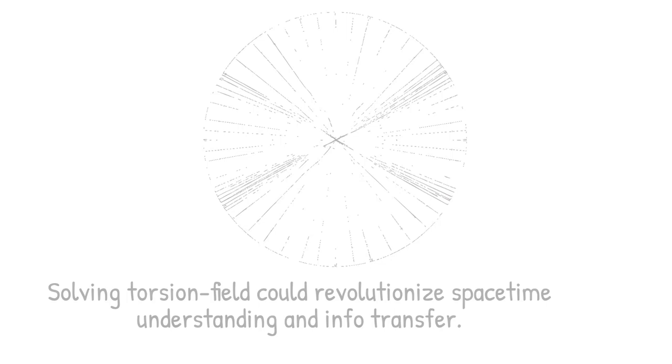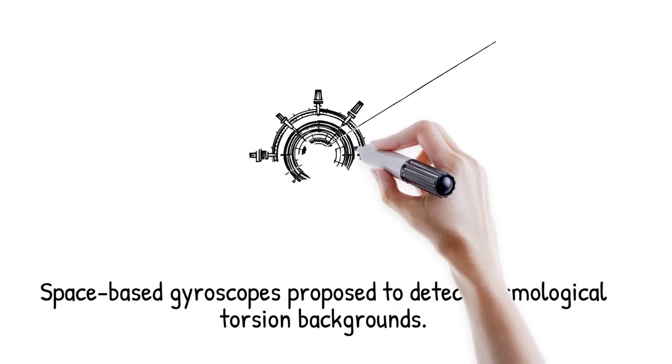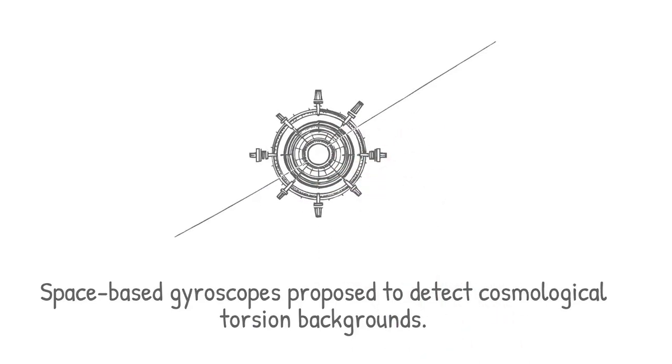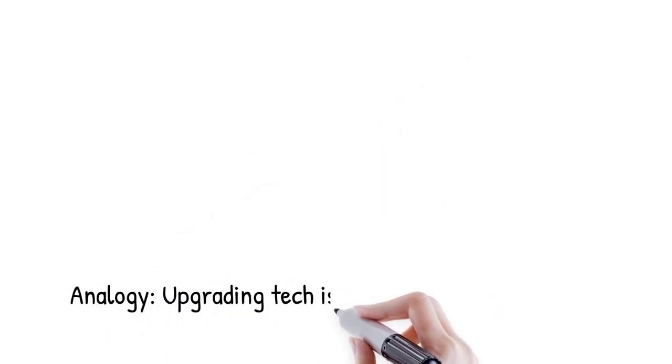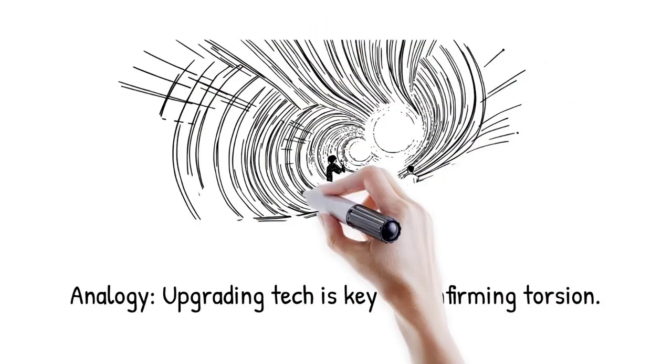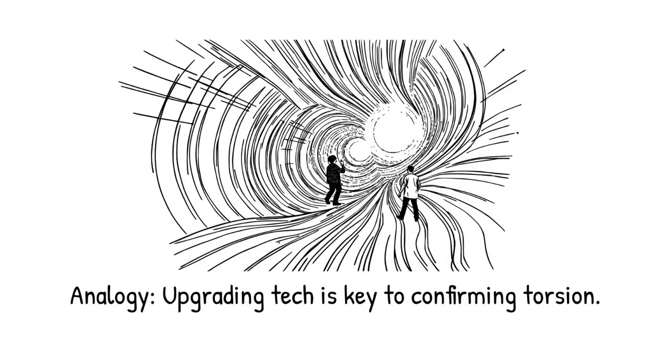Proposed space-based gyroscope arrays aim to detect cosmological torsion backgrounds, if they exist at all, like upgrading from an old metal detector to a ground penetrating radar. Only with the right technology can you definitively confirm if treasure lies buried.